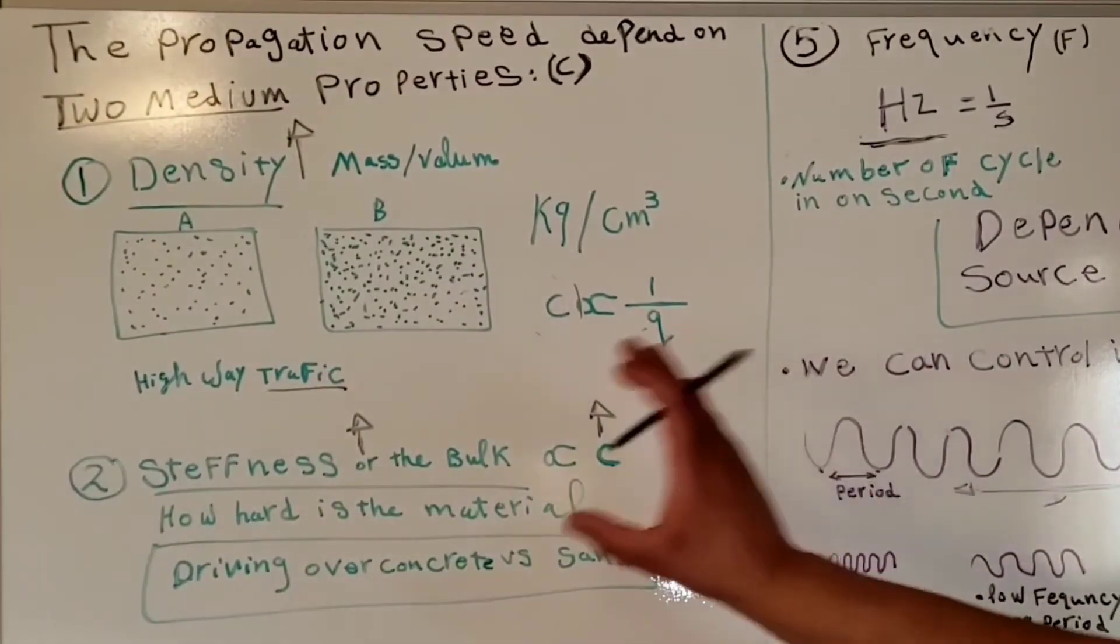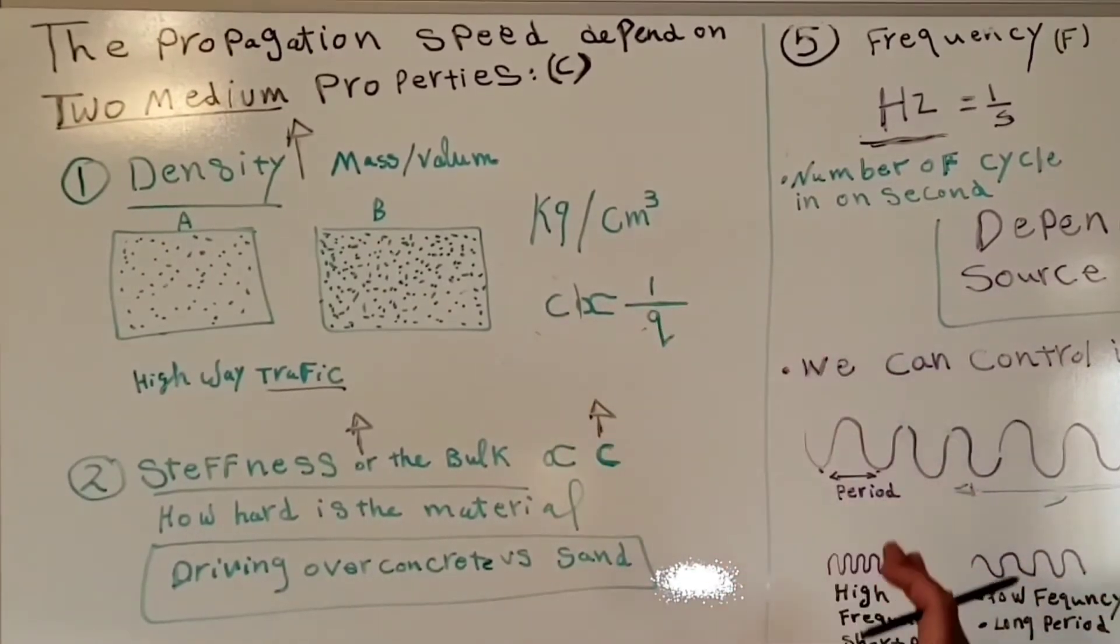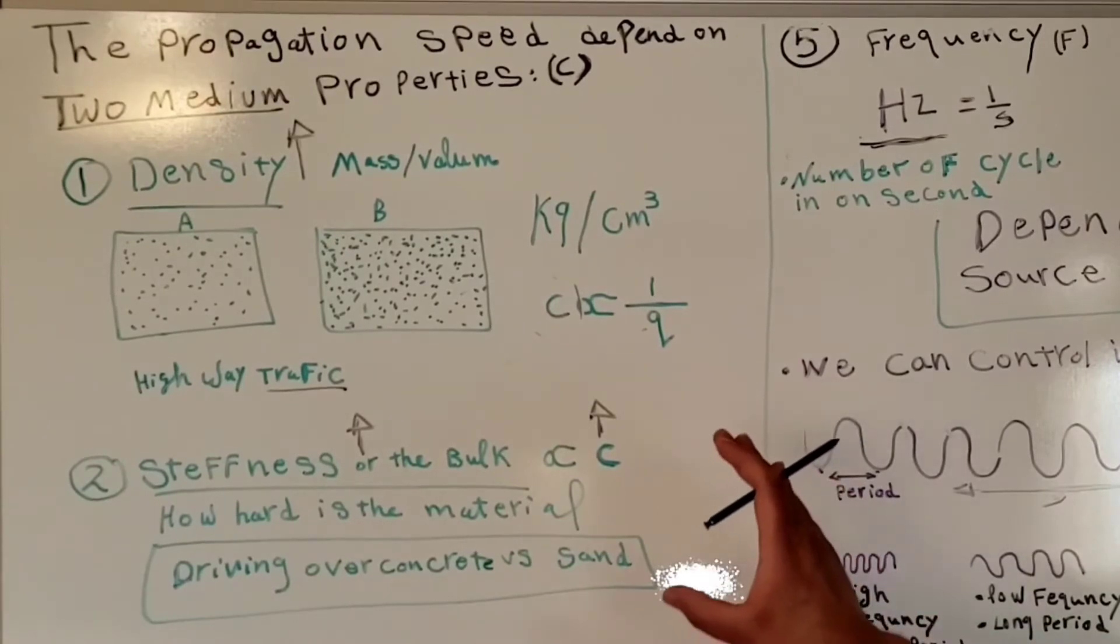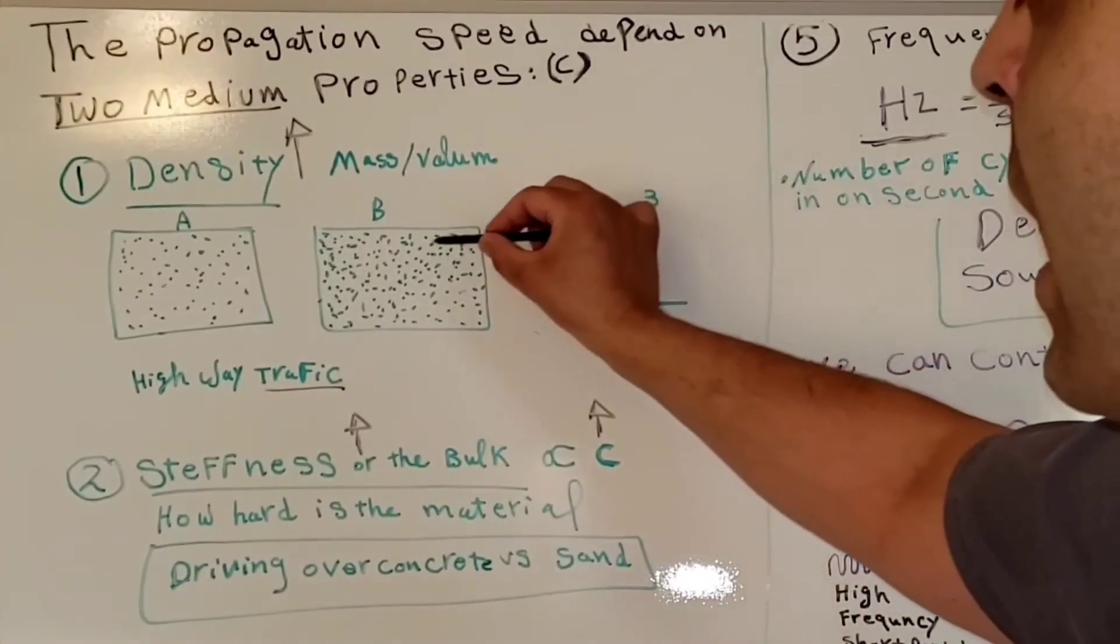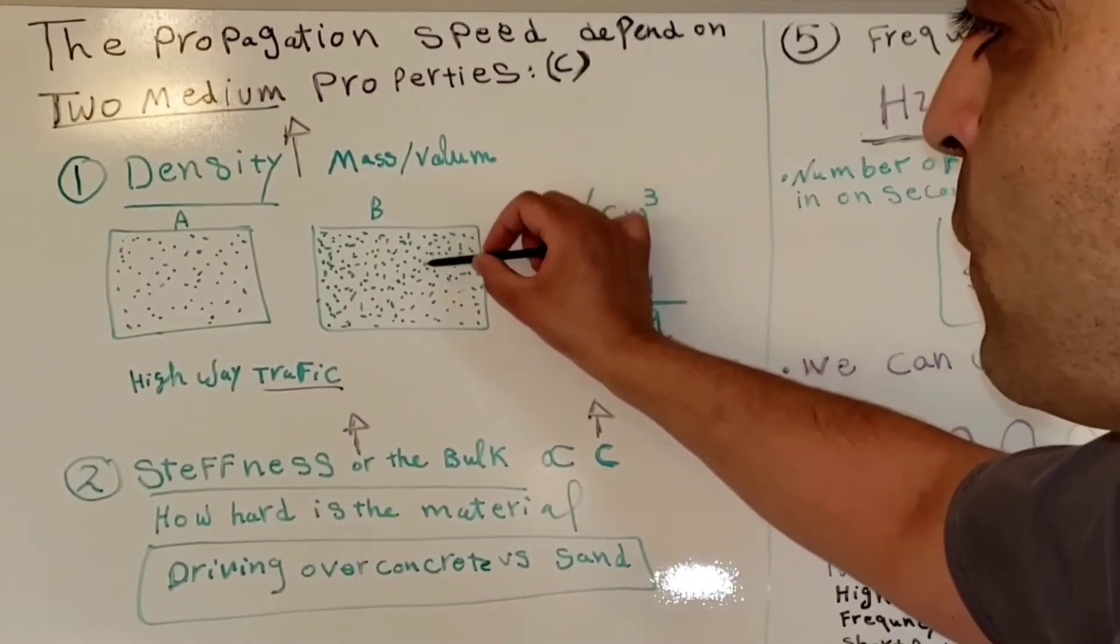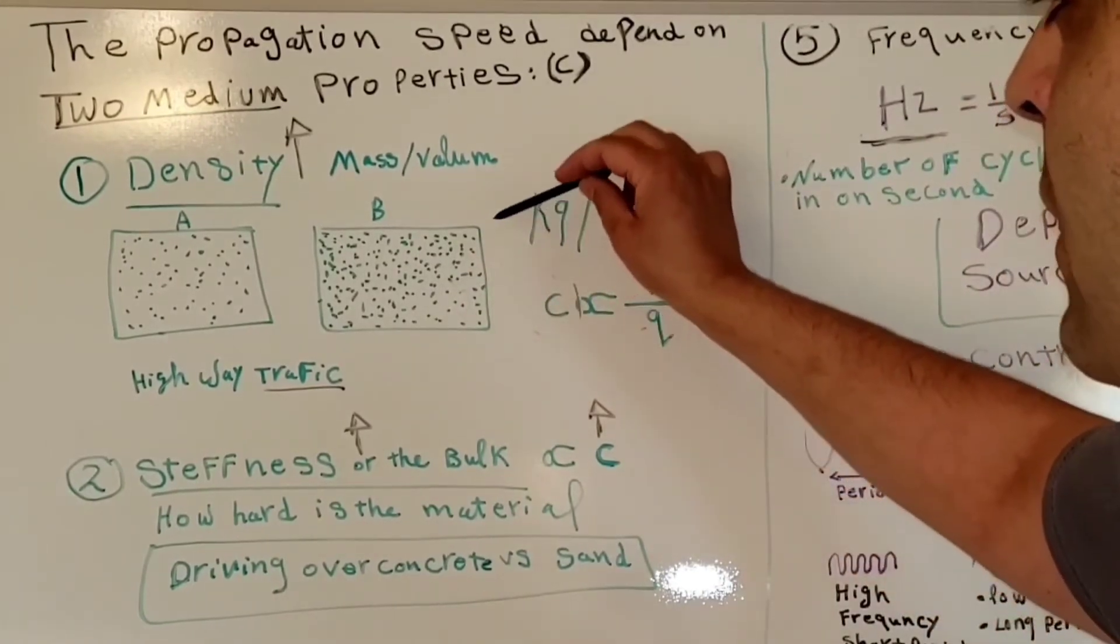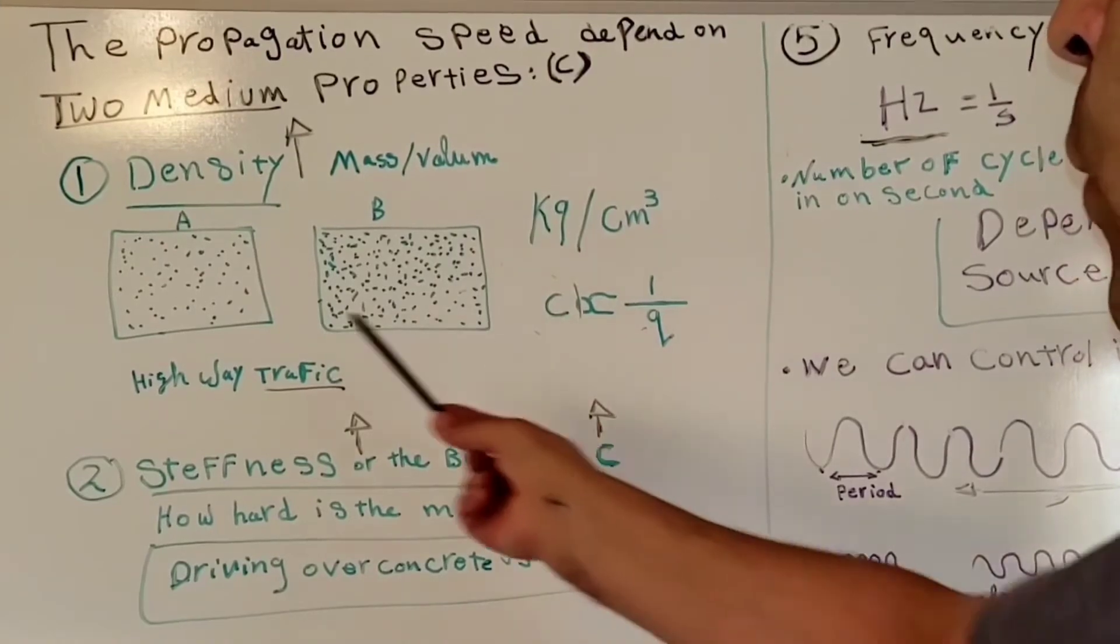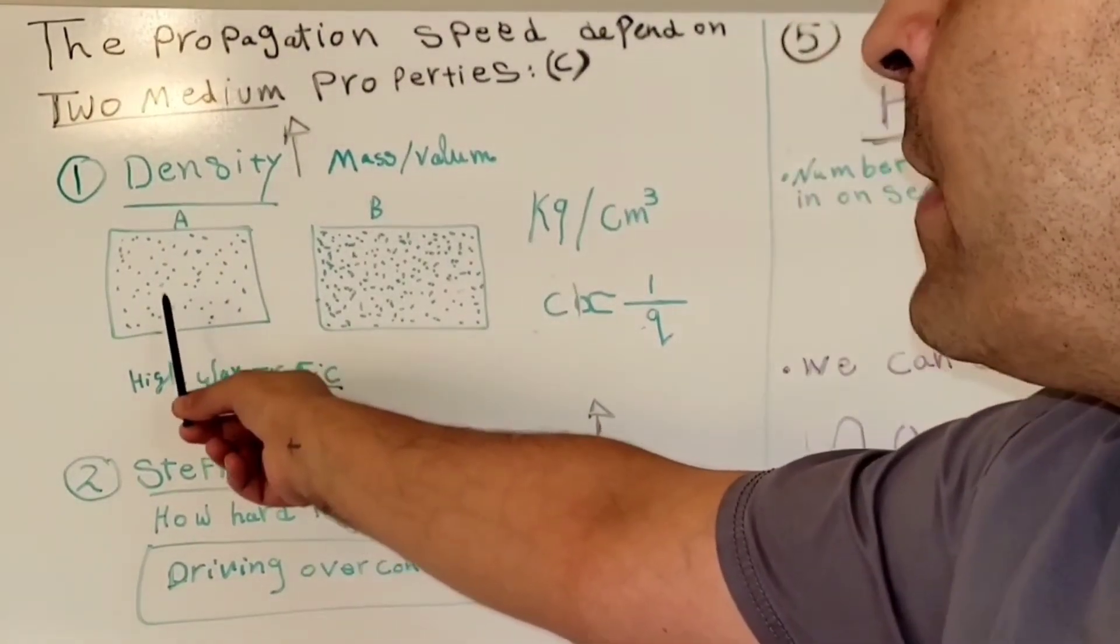Since I told you that propagation speed is like the speed limit on the highway, when the highway is crowded with a lot of traffic, the speed limit decreases. When the highway has less traffic...